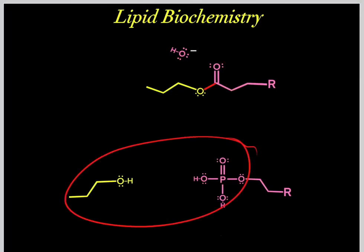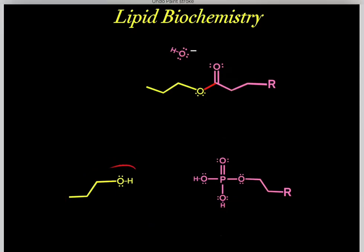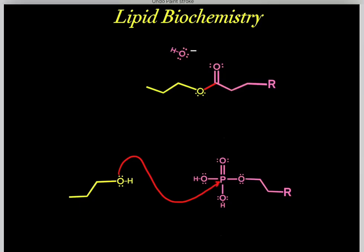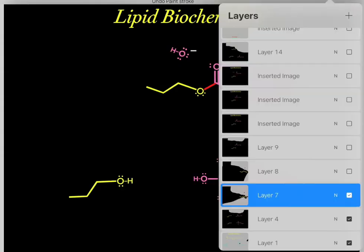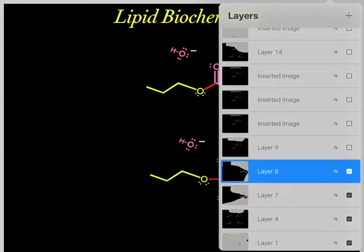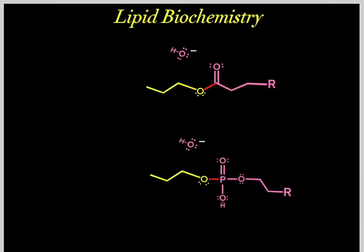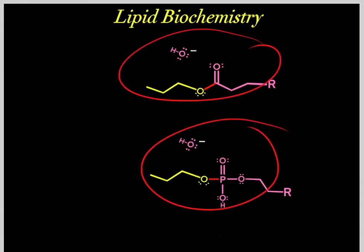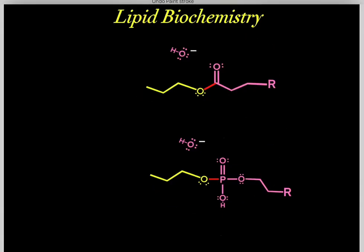The second mechanism involves a hydroxyl and a phosphoester, where again it's the same idea. We nucleophilically attack forming a bond, and when we form a bond, we break a bond. These electrons fall on this oxygen and we're left with this phosphodiester. So these are the two mechanisms you need to be aware of.